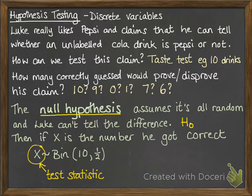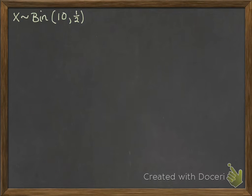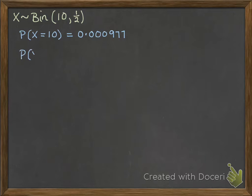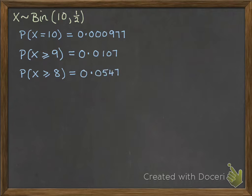This X value is called the test statistic, and that's what we're going to test against — how many he actually got right and whether that number is good enough to accept his claim. If X follows a binomial distribution, we get the following probabilities: the chance that he gets all 10 correct is really small — 0.000977. The chance that he gets 9 or more correct is still very small, and then 8 or more and 7 or more. At what point are we saying that's enough probability to accept his claim?